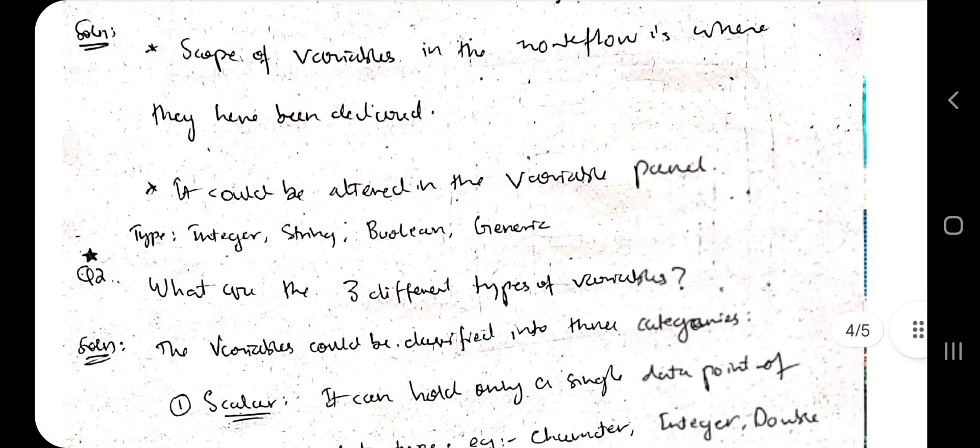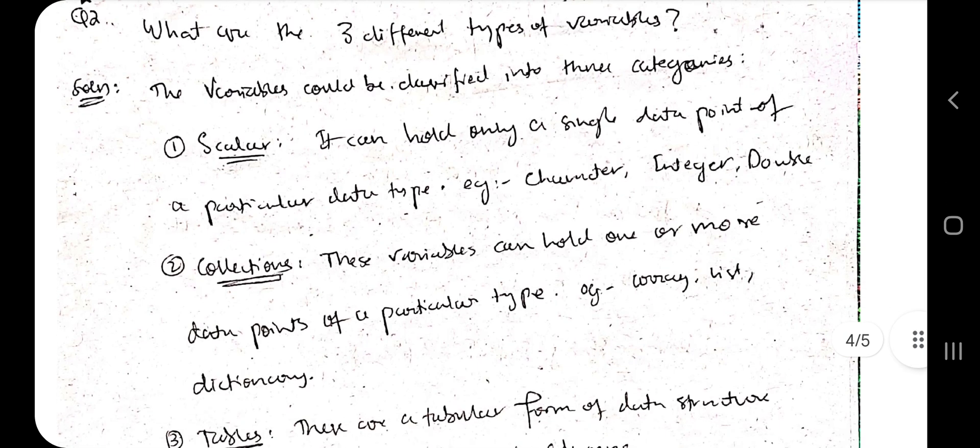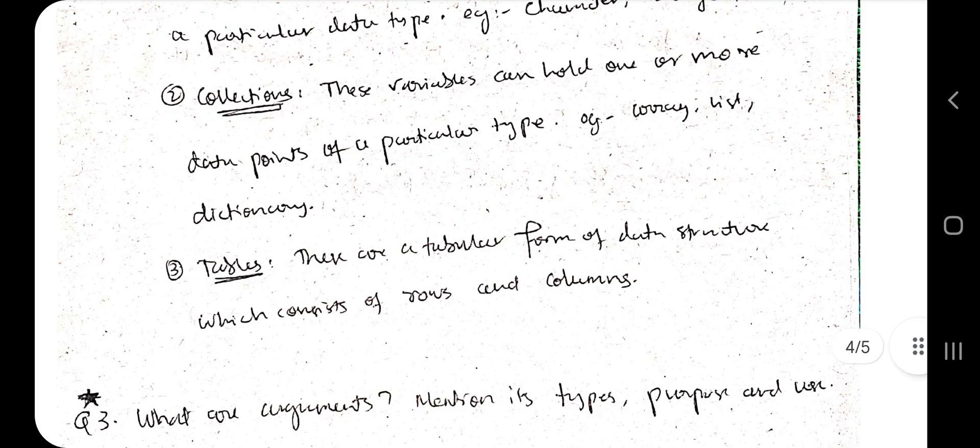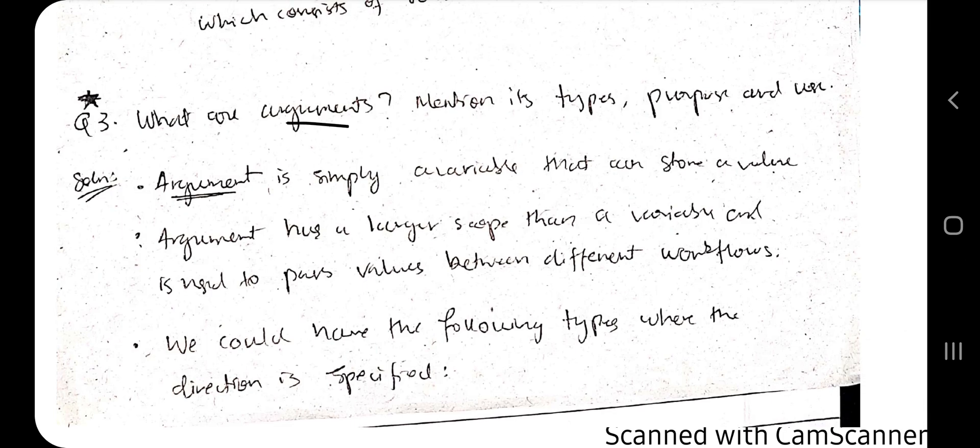What are the three different types of variables? This is important one. Scalar variables which only has a single data point. Collection of variables which can have different types. Data tables can have rows and columns. What are arguments? Mention its type, purpose and use. Arguments is nothing but a variable but it can be used to transfer one part of the program to another part of the program data.